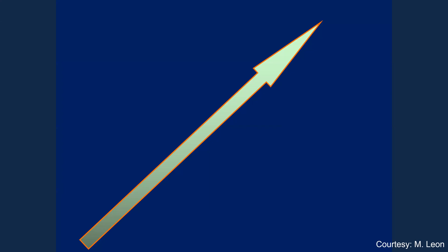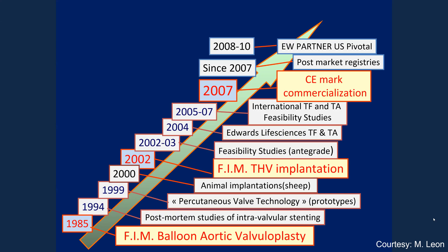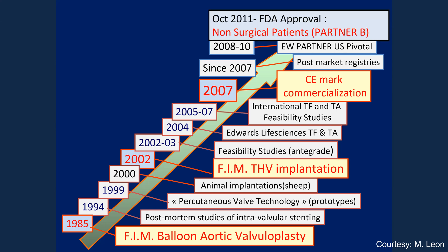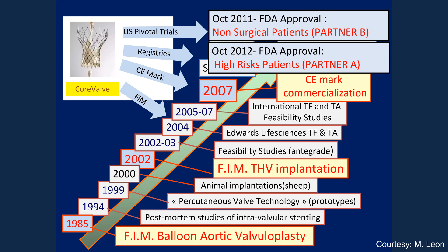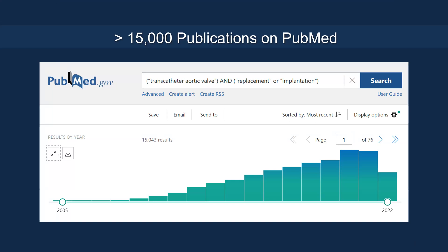There's been a lot of evidence generated for TAVR over the past two decades, beginning with the first-in-human balloon aortic valvuloplasty in 1985, and subsequently with the PARTNER trial and EVOLUT trial in the United States. In October 2011, the non-surgical cohort was approved by the FDA via the PARTNER B study, and PARTNER A study received FDA approval in October 2012. The Medtronic devices have also undergone clinical trial and approval, and now over 15,000 publications have been generated on PubMed on the topic of transcatheter aortic valve replacement or implantation.